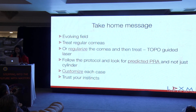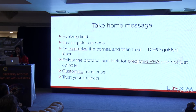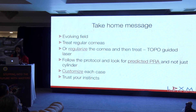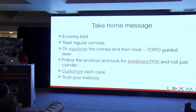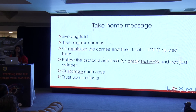In the end, our understanding about astigmatism is still quite evolving. If we choose our cases well, we can have a very good visual outcome. The role of topography-guided PRK in the future is upcoming and will definitely help us make the surface better. When choosing whether to implant a toric lens or not, it is a good idea to look at the predicted post-operative residual astigmatism instead of the astigmatism shown on your biometer. Finally, customize each lens for each case and trust your instincts — then you are sure to get a good result.